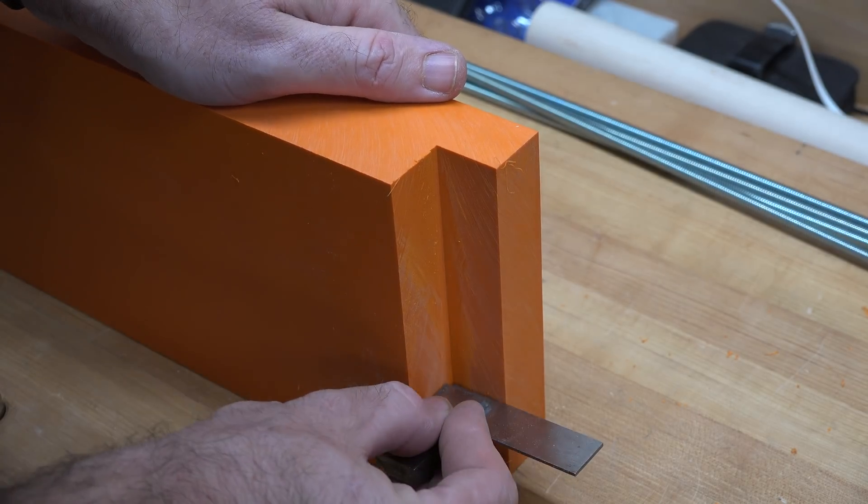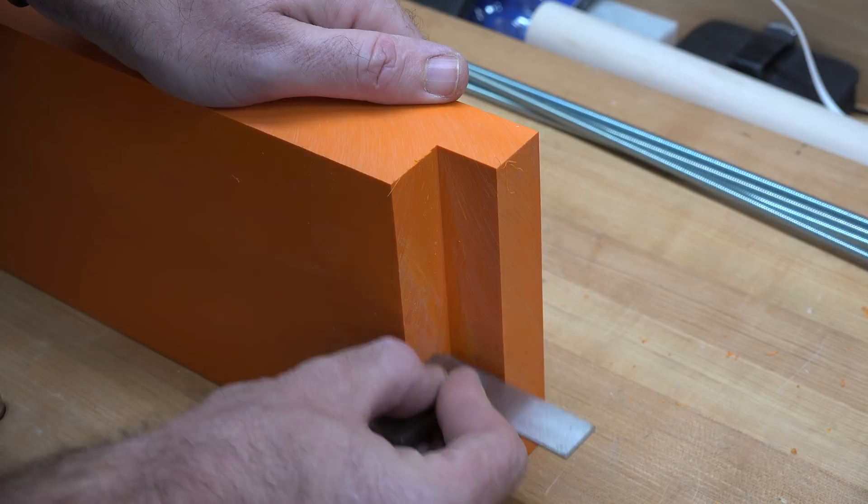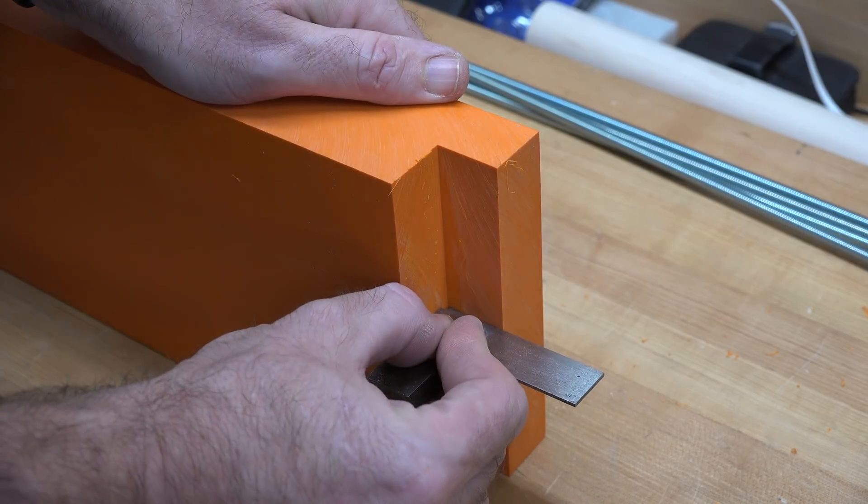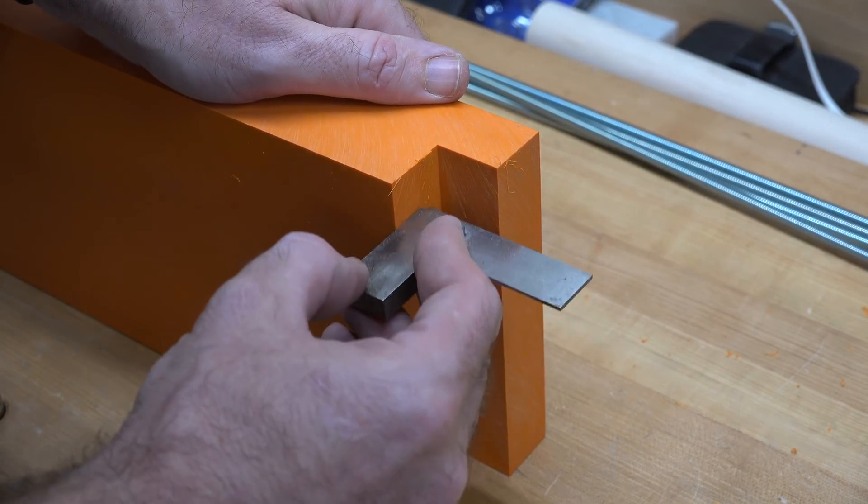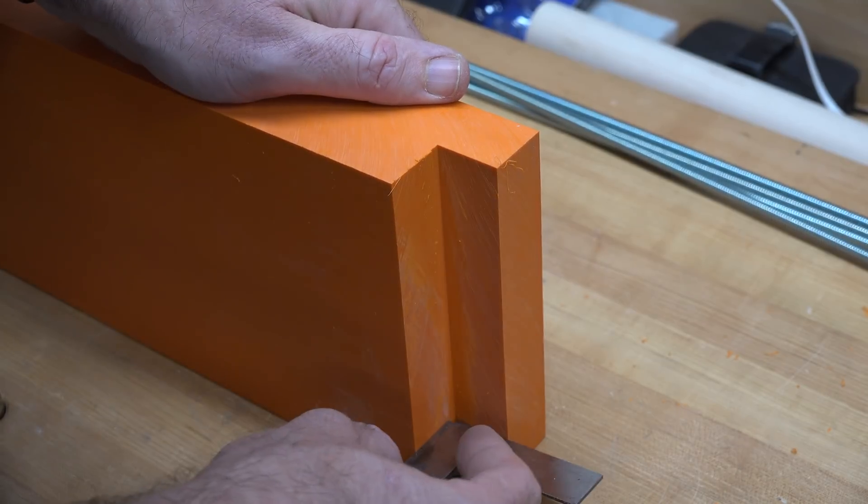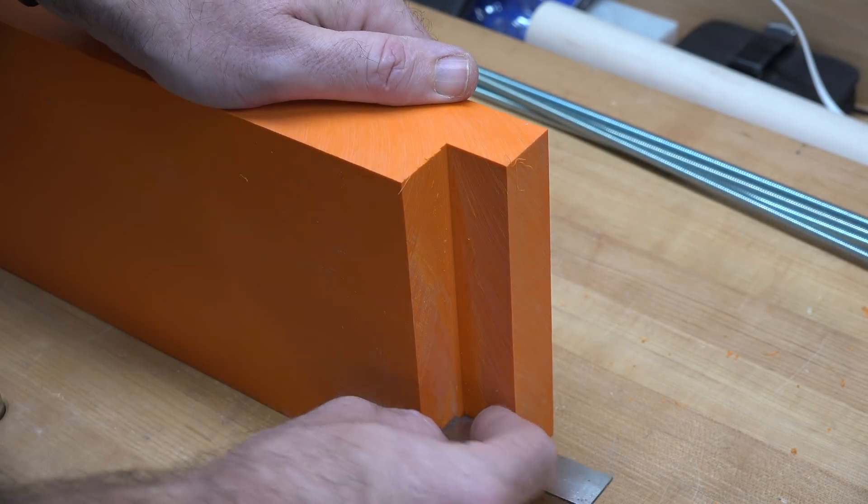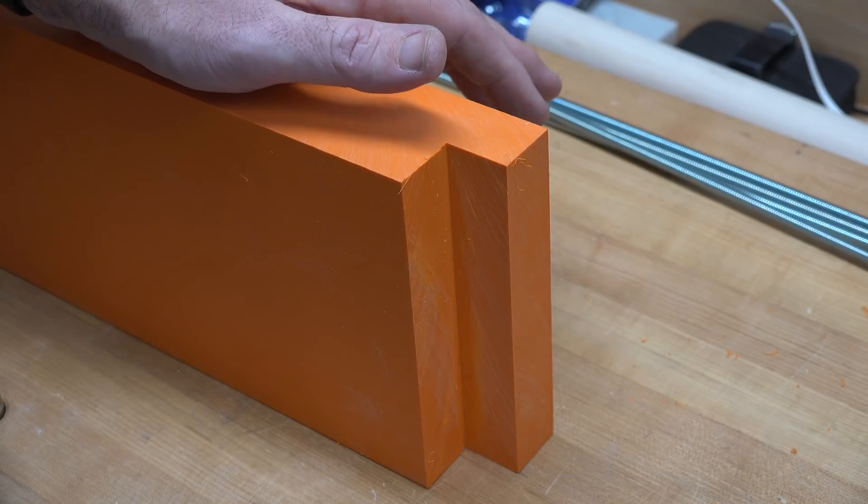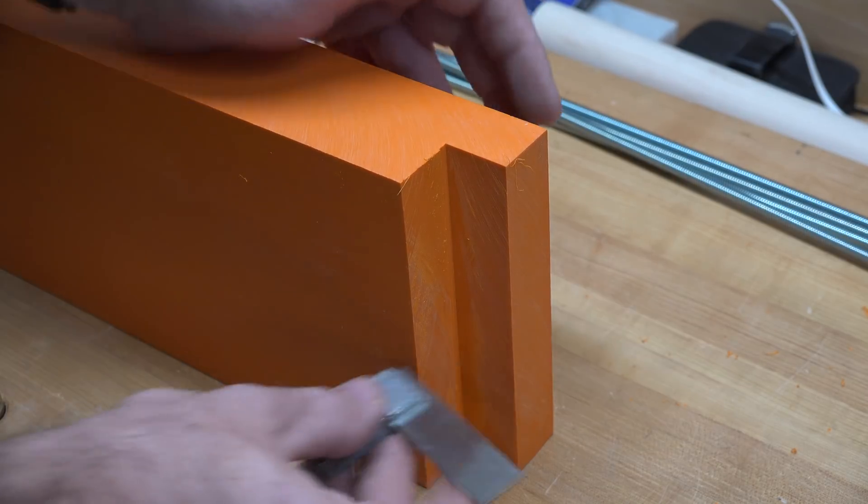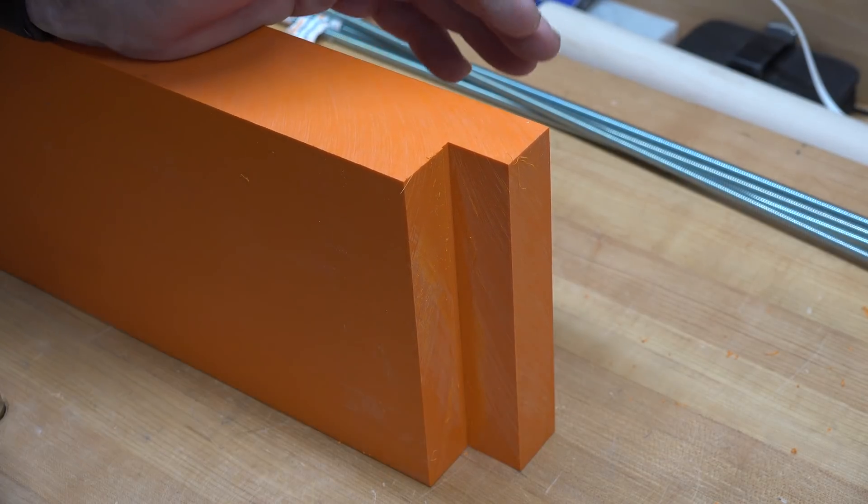Before we go any further, we're just going to get a small two-inch square in here and make sure we are square all the way along on both cuts. If you're not, you need to figure out why and correct that. This one looks good.